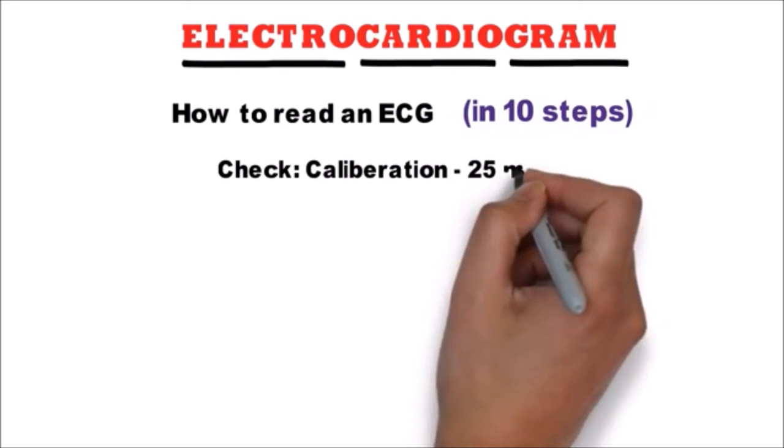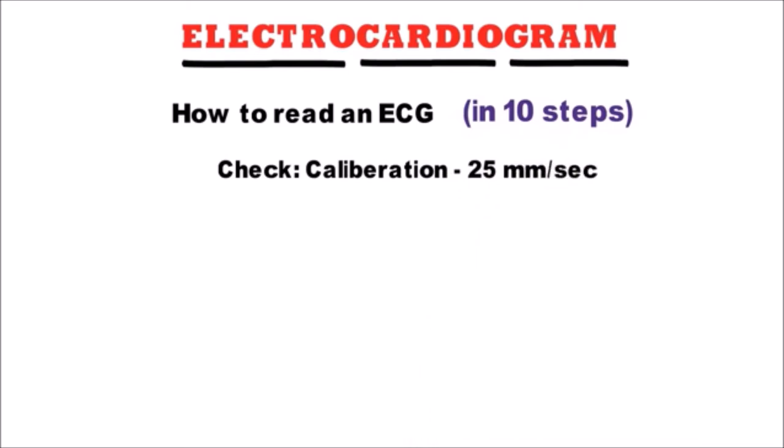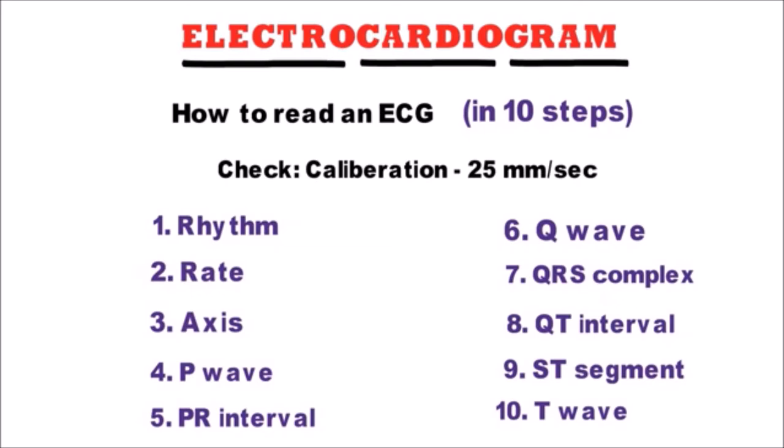Before that we need to check the calibration or speed of the machine which is normally set at 25 mm per second. So we will discuss the ECG interpretation in this manner: Rhythm,